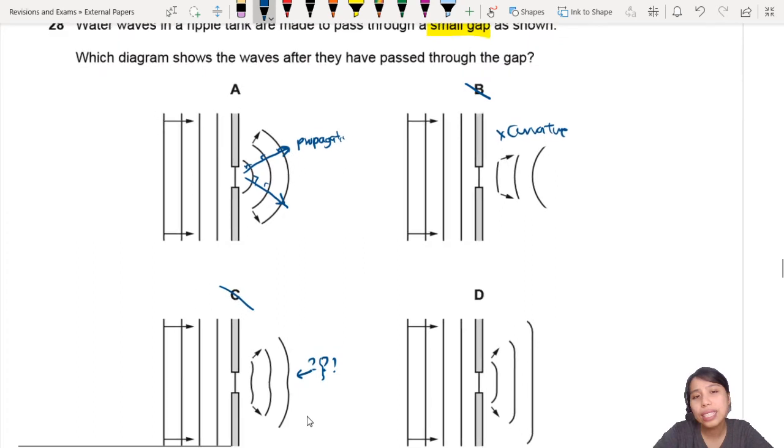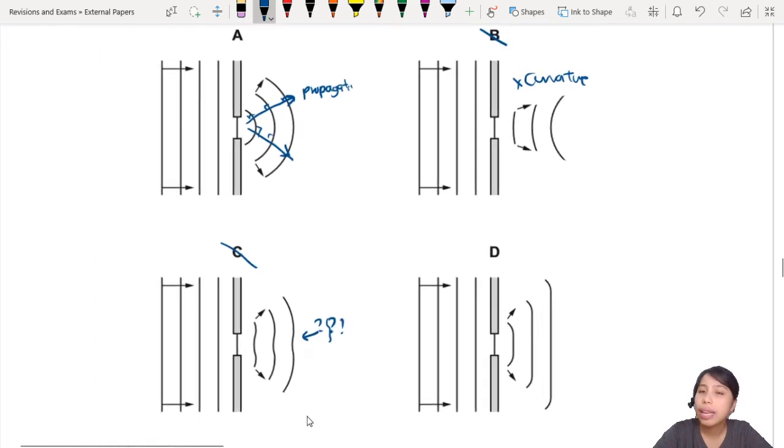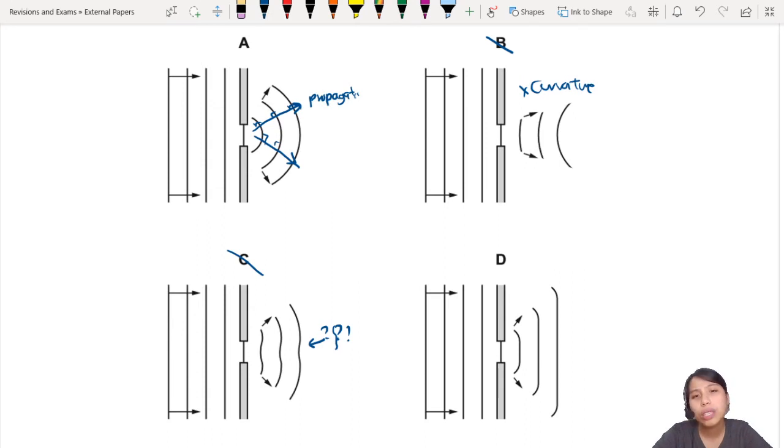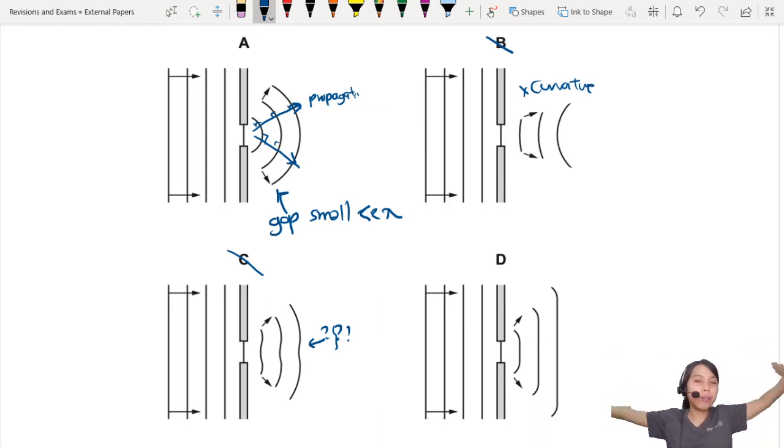So we're left with A and D, and they are both diffraction patterns and it's totally possible. But how do you know which one is the correct answer? How do you decide between A and D? The hint lies here. Usually, when we draw a curve like this, this is because the gap is small, or I would say smaller, smaller than the wavelength. So the gap is much smaller than the wavelength and so the wave will go through and spread out a lot.